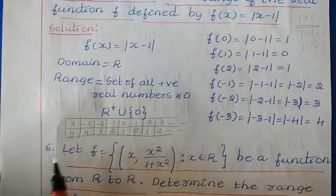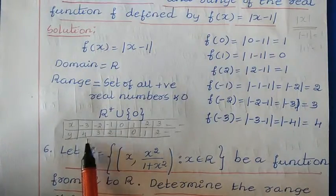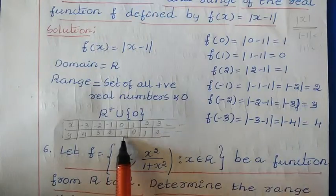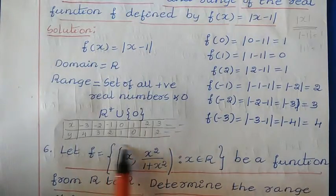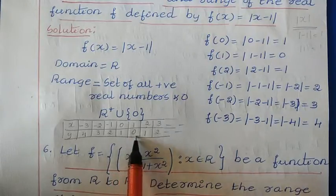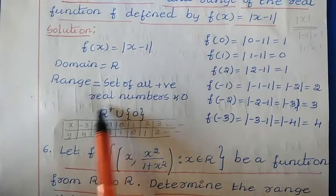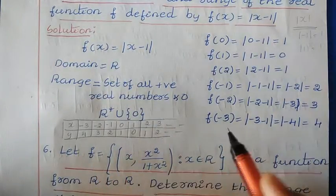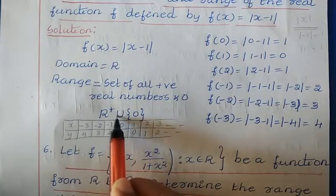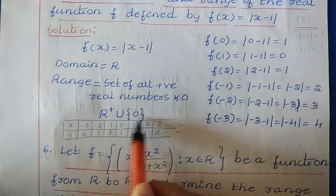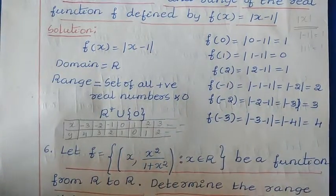Just by referring the table, you can see that for x values like -3, -2, -1, 0, 1, 2, 3, we get range values 4, 3, 2, 1, 0, 1, 2 respectively. So for negative as well as positive values, we are getting only positive real numbers and 0. Therefore, the range is R⁺ union {0} — that is, all positive real numbers and 0. Since 0 is not included in R⁺, we write it separately as the union of {0}.